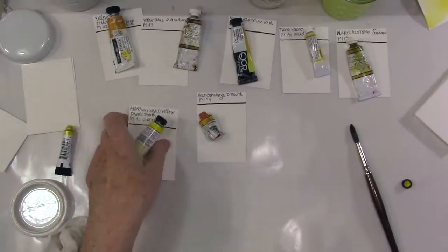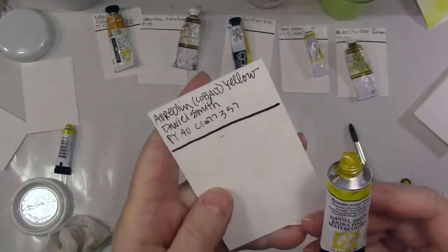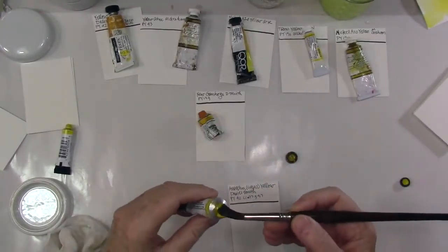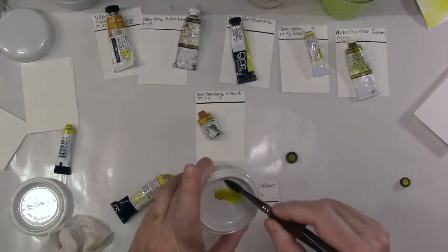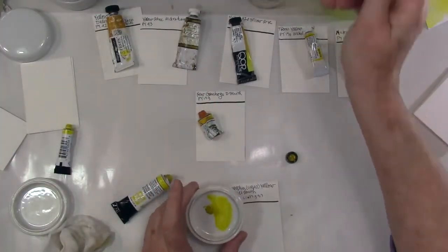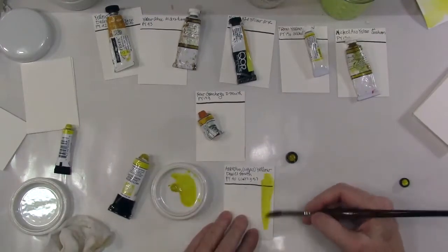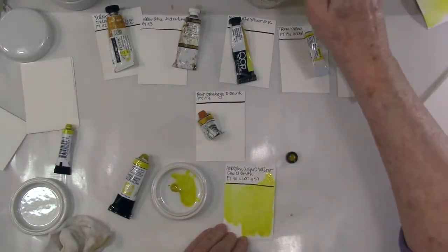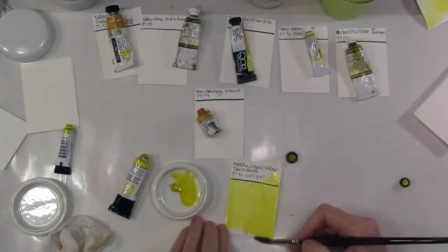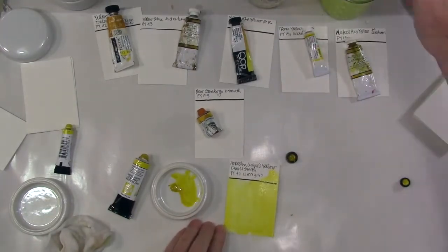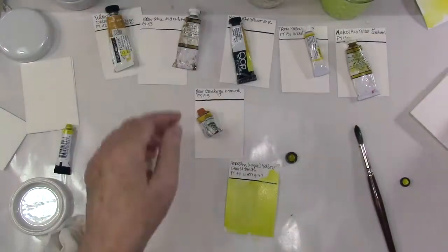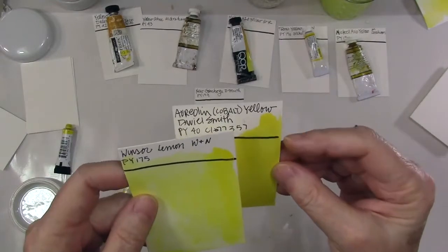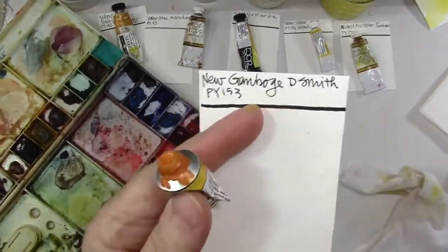I go through a lot of yellow so... Now we have the cobalt yellow, and that has sort of a long name and number after it, but it's PY 40, and this is Daniel Smith. This is another really nice bright yellow. It's just over that line, it's not as cool as the lemon, so you can see the difference there. Just a little warmer but pretty true.